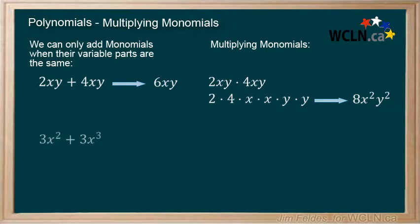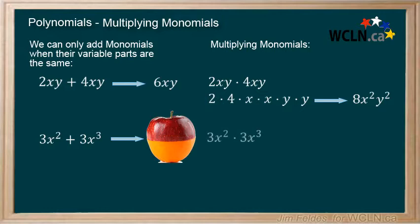Remember that when we try to add two terms with differing variable parts, it is like we are trying to add apples and oranges. So we can't add or simplify these two terms. But there is nothing to stop us from multiplying them, and we end up with 9x to the fifth.